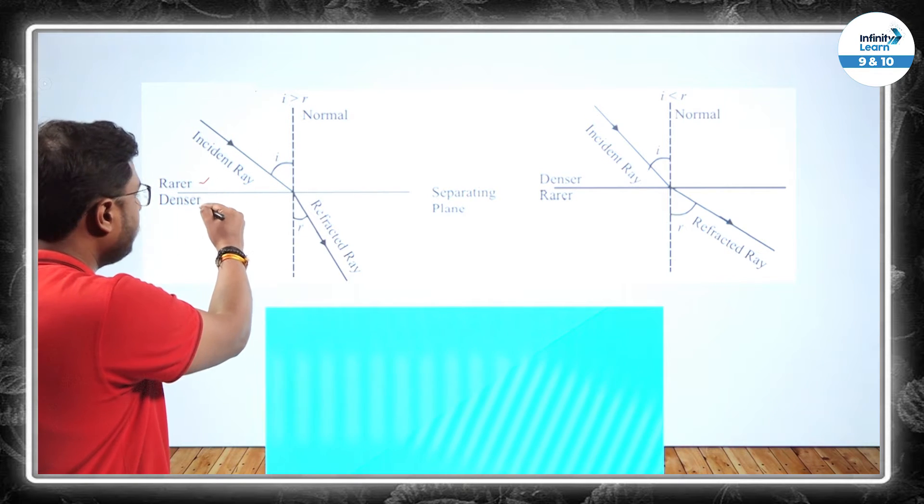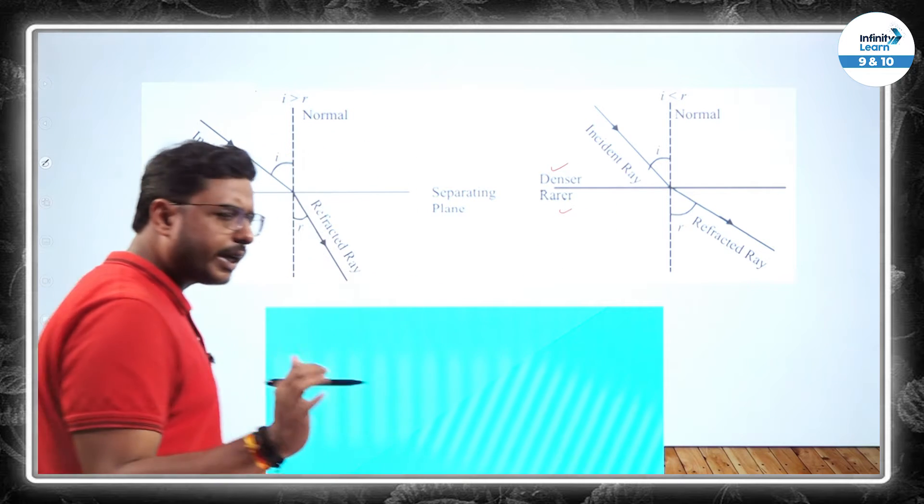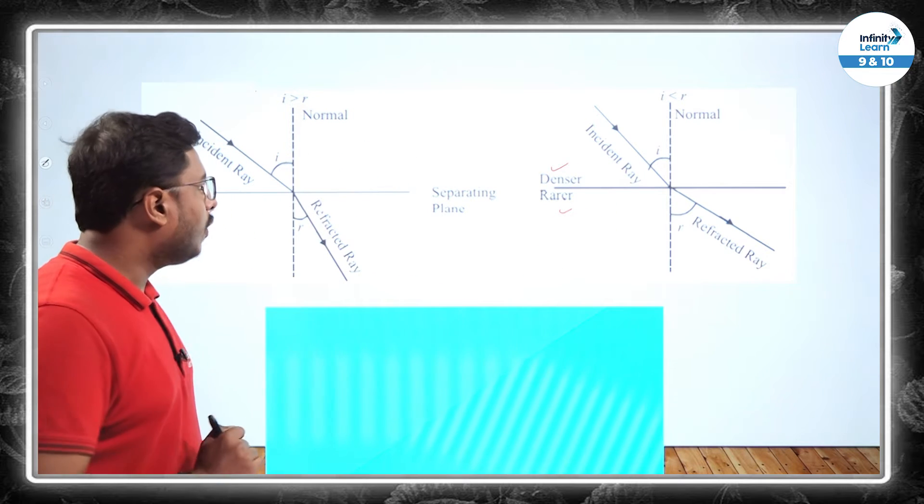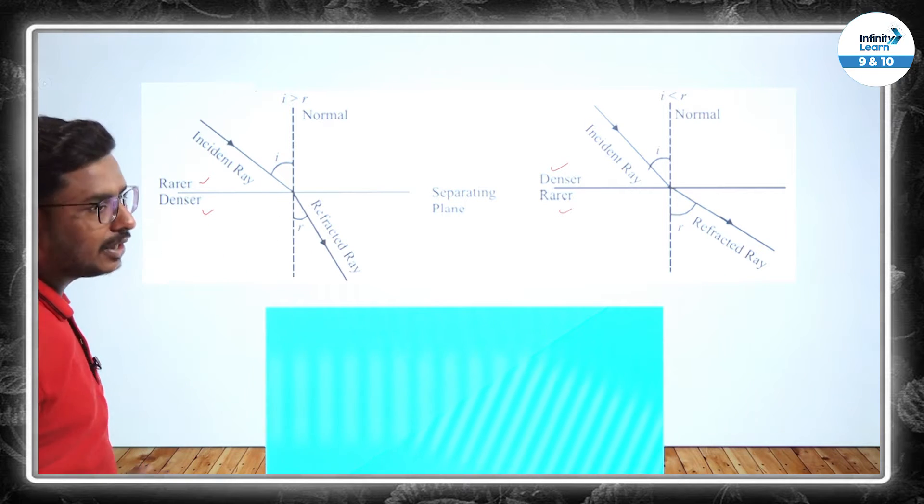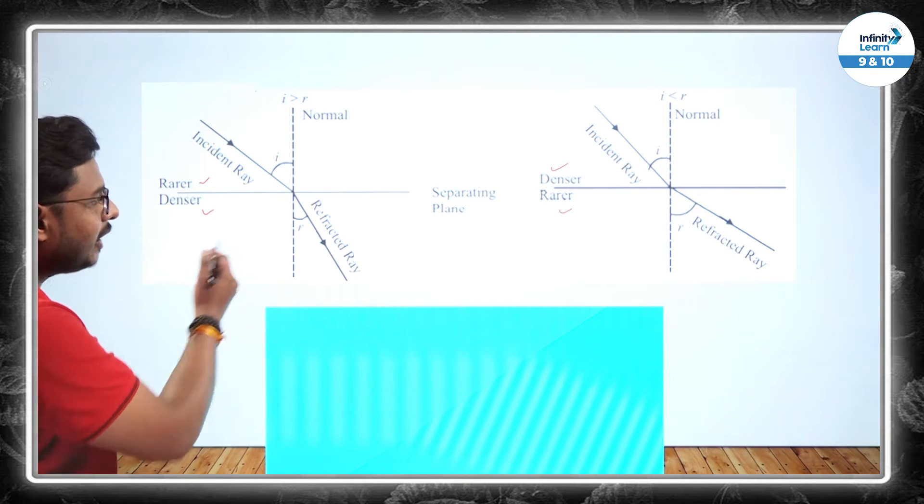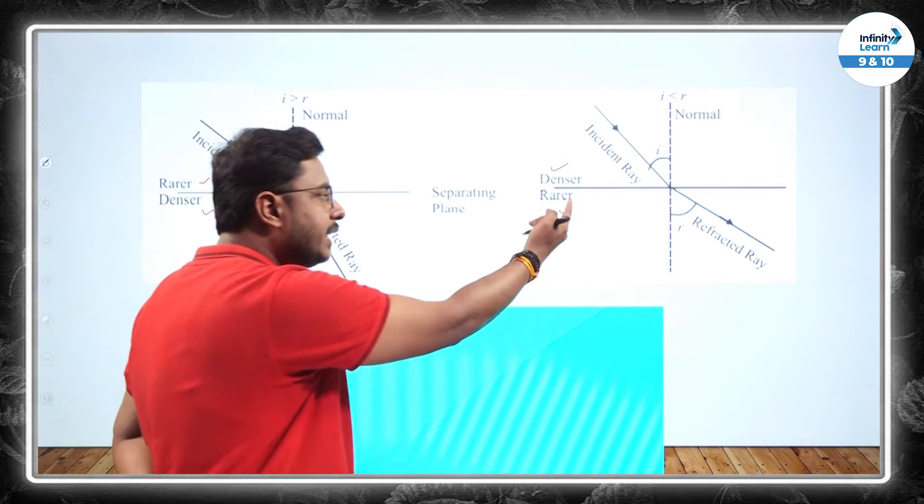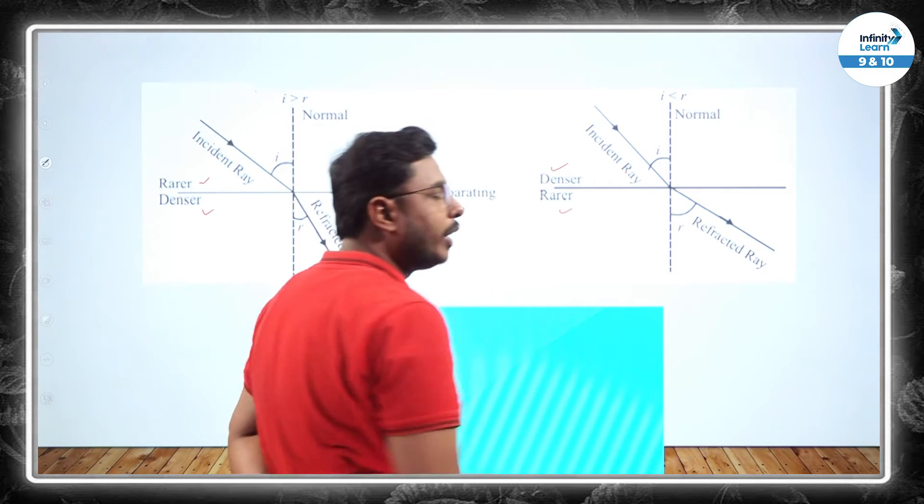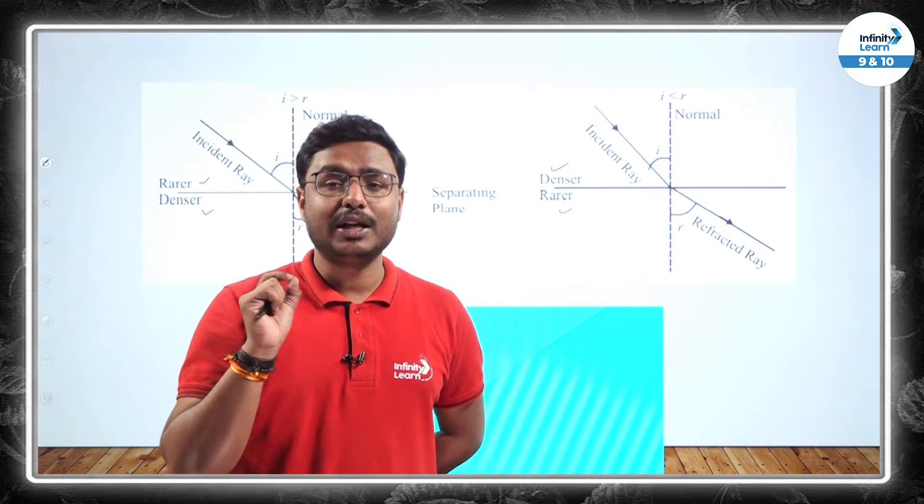Always remember, there is a concept which says that light always selected the shortest path to travel. And what is happening here in these cases, this is a rarer medium, this is a denser medium. Both the cases I am showing it to you. Now if you see in this case, when the light is passing from rarer to denser medium, what is happening here? Light is moving towards the normal. And in this case, denser to rarer, it is going away from the normal.